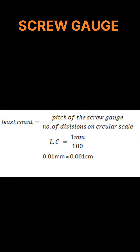Let us first find out the least count. It is equal to the pitch of the screw gauge divided by the number of divisions on the circular scale. The pitch is the linear distance travelled by the screw in one complete revolution, which comes out to be 1 mm. So the least count will be 1 mm divided by 100, that is 0.01 mm.